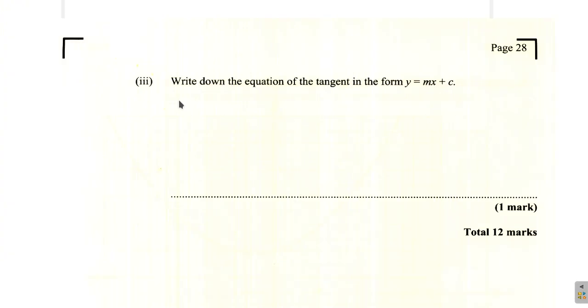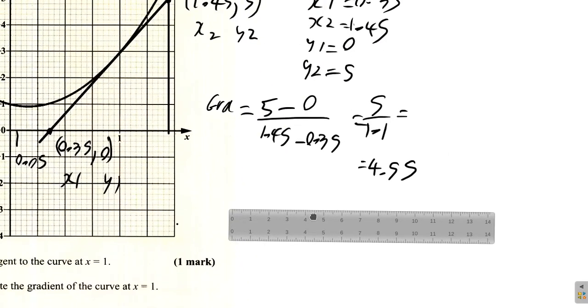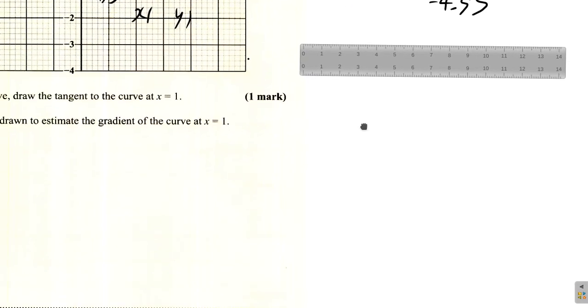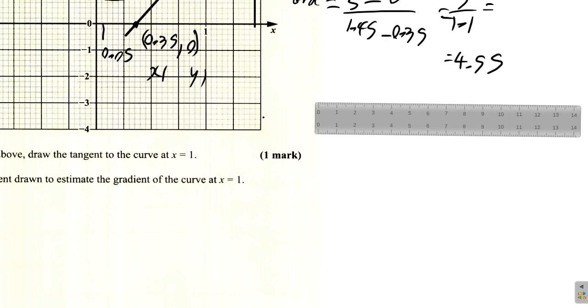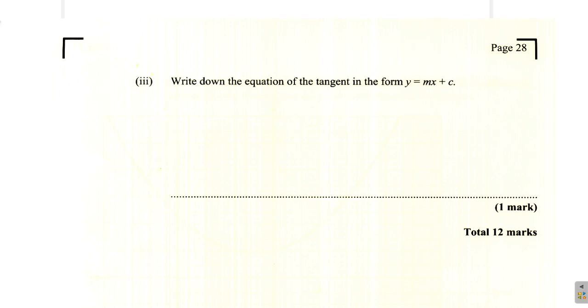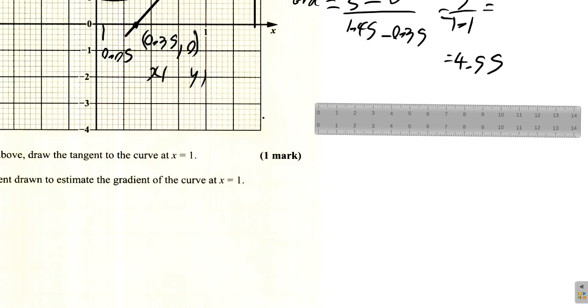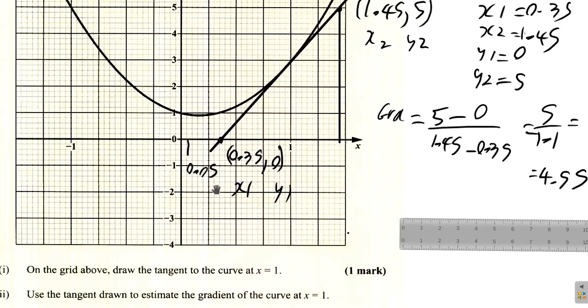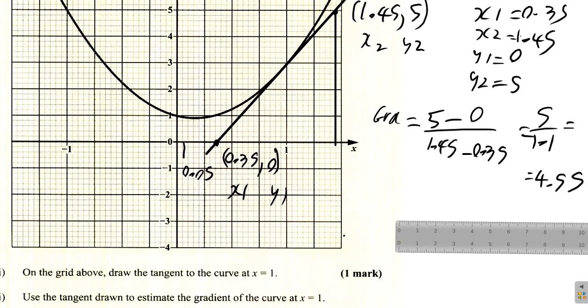Look like that is that. What else do they say we have to do? Oh here they say write down the equation of the tangent in the form y equal mx plus c. So here we have the gradient of 4.55. What we have is y equal 4.55 x plus c but we want c the y intercept. To get c you know we would have to extend the gradient down some more.